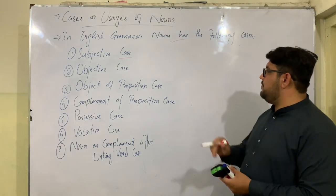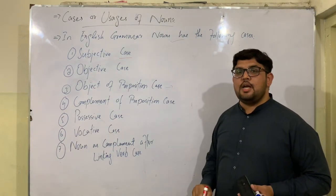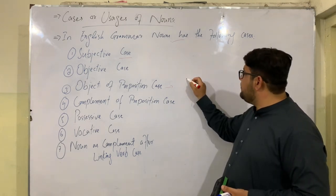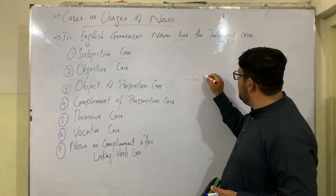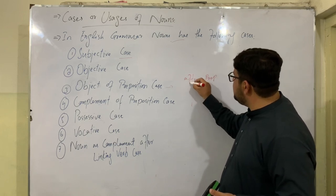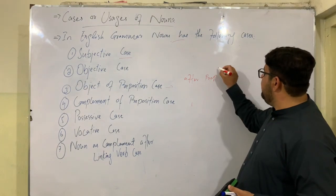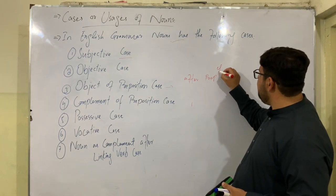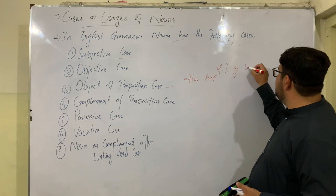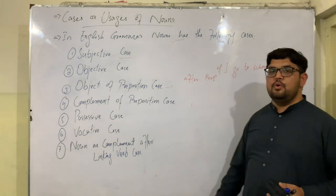The third case of noun is the object of preposition case. In this case, a noun comes after a preposition in a sentence. For example: 'I go to school.' Here, 'school' comes after the preposition 'to.'